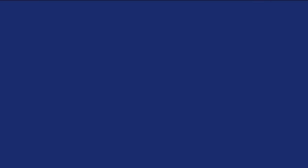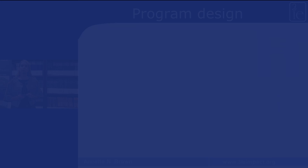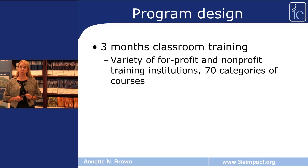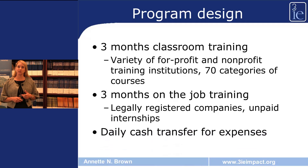Here's an example. In Colombia, there was a program designed to give skills to young people in urban settings. This program, Jovenes en Accion, included three components: three months of classroom training, three months of on-the-job training, and a daily cash transfer to cover transportation expenses.